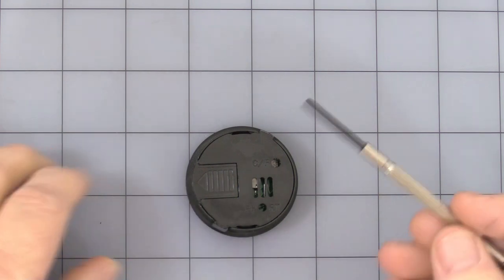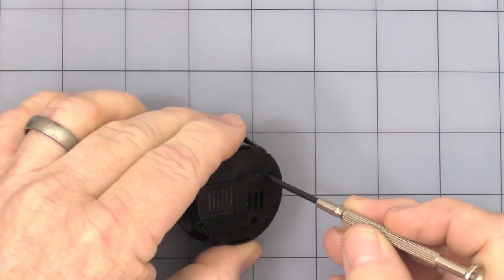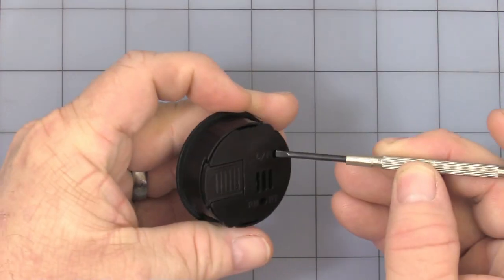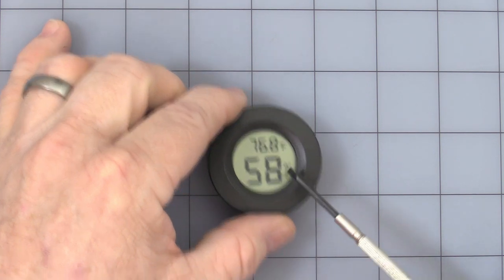And you simply need to take something that is conductive, stick it in the hole, and just touch it once to switch it over to Fahrenheit.